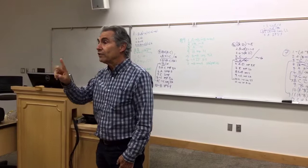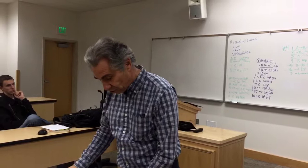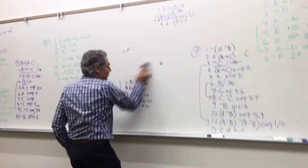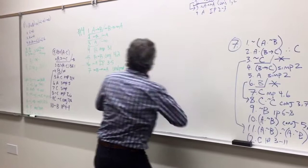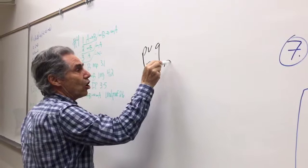You have gotten two types of arguments where you have to make assumptions: one is the conditional proof and the other is the indirect proof. I want to show you one more that the text doesn't go into, which I think is absolutely essential because it's so intuitive and natural. It's based upon the argument called dilemma. So dilemma is this argument: P or Q, P then R, Q then R.